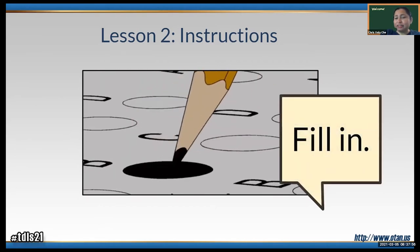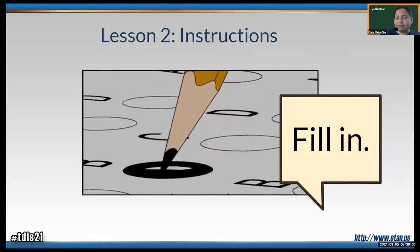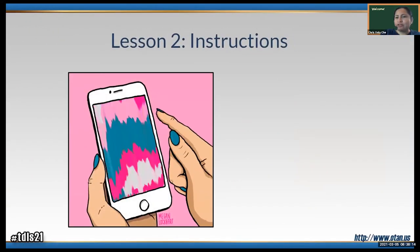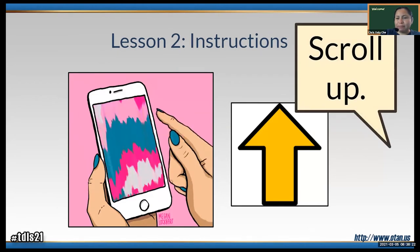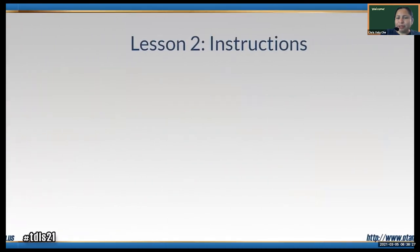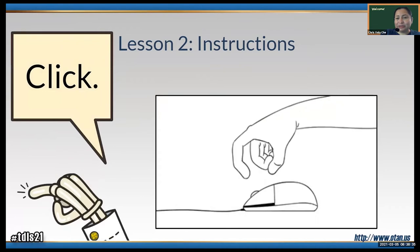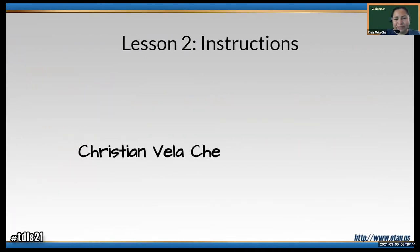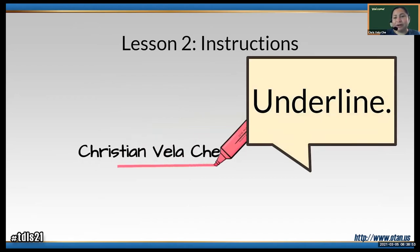The answer is 'fill in.' Next instruction — can you type your answer? What do you think the instruction of this GIF is? Scroll up — right? So we have the picture and then also the arrow. Pretty simple. This one is pretty easy to guess — the instruction here is 'click.' So you have an image to show what that means. Another one — what is the instruction here? 'Underline.' So underline if you need to underline. You show the picture and it's easy to understand.